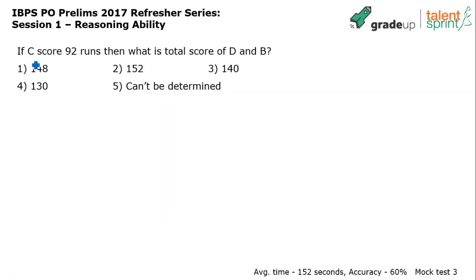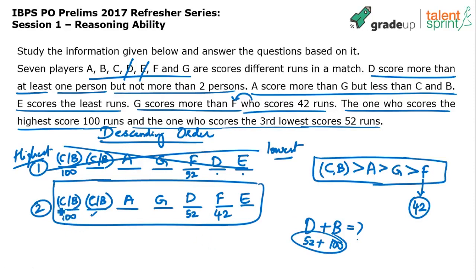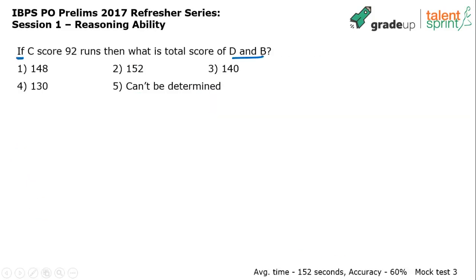Question 1: If C scored 92 runs, what is the total score of D and B? If C scored 92, C does not come in the first position, so B comes first and B scored 100. D scored 52. Therefore D plus B equals 52 plus 100 equals 152. Option 2 is the answer.